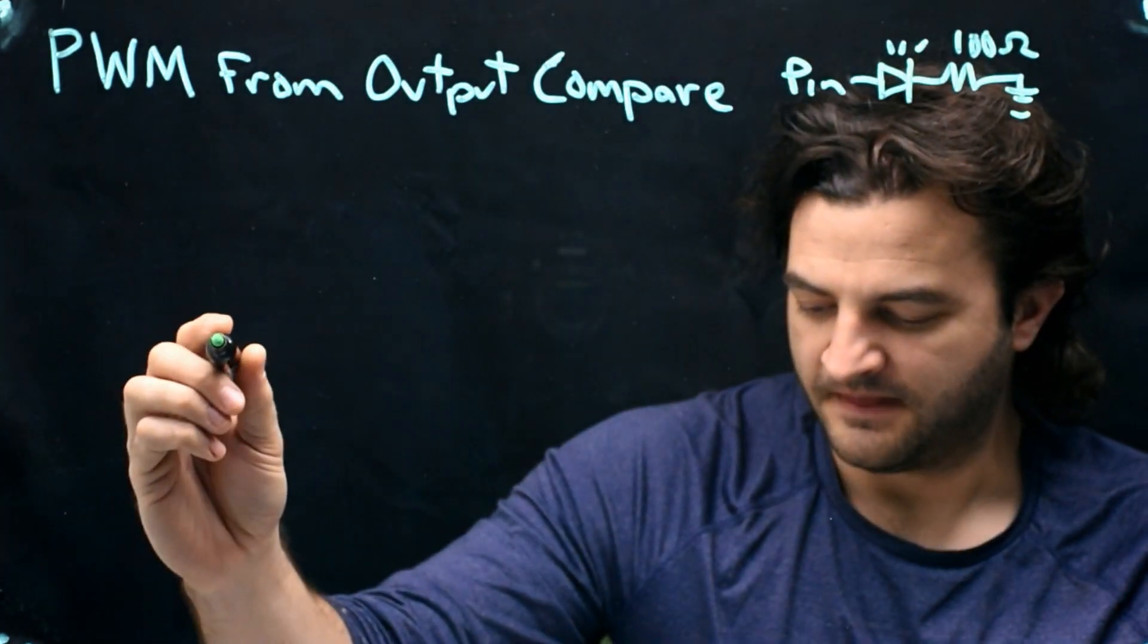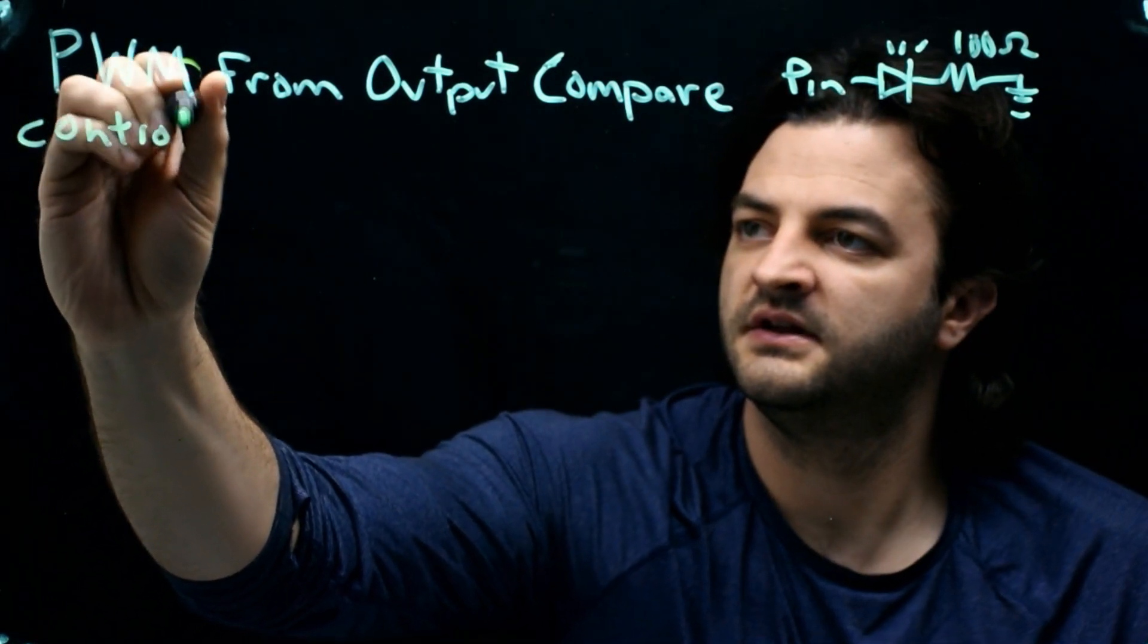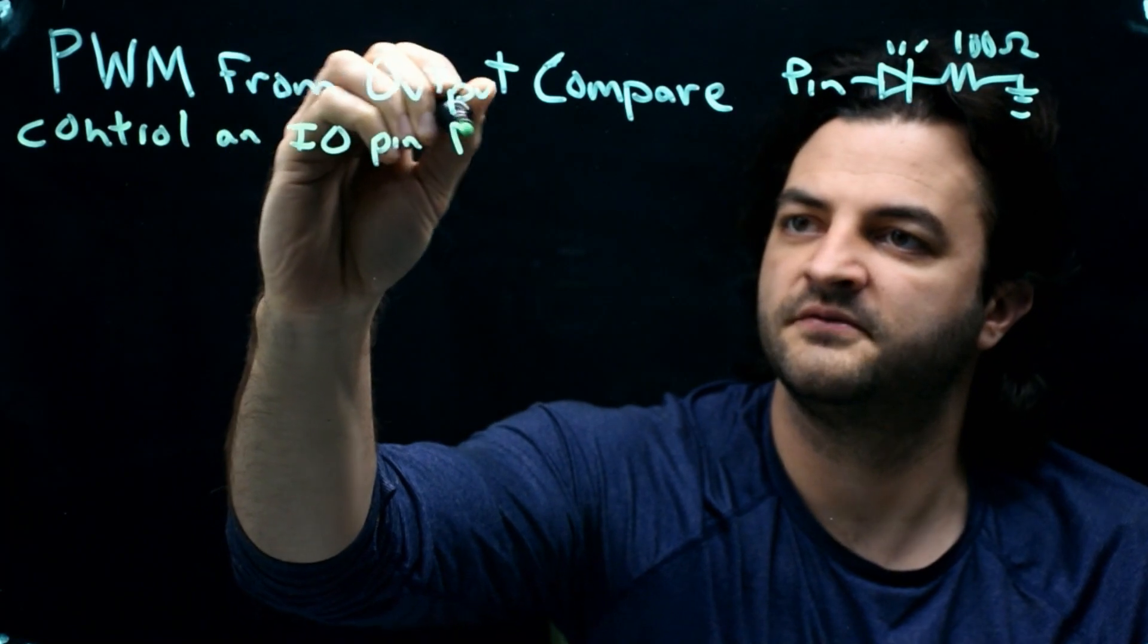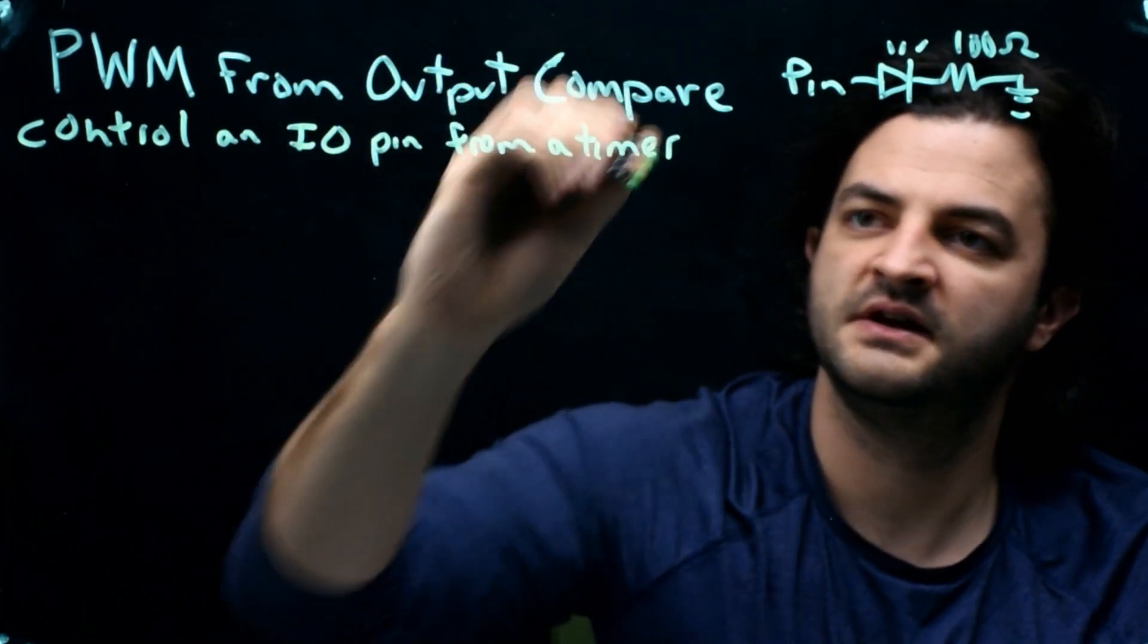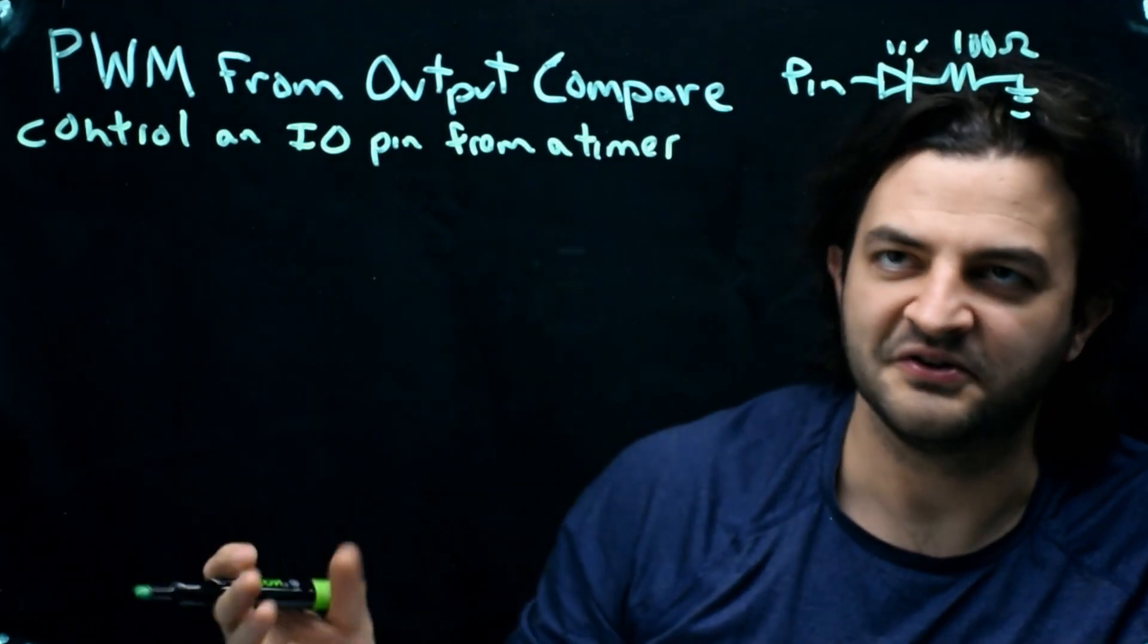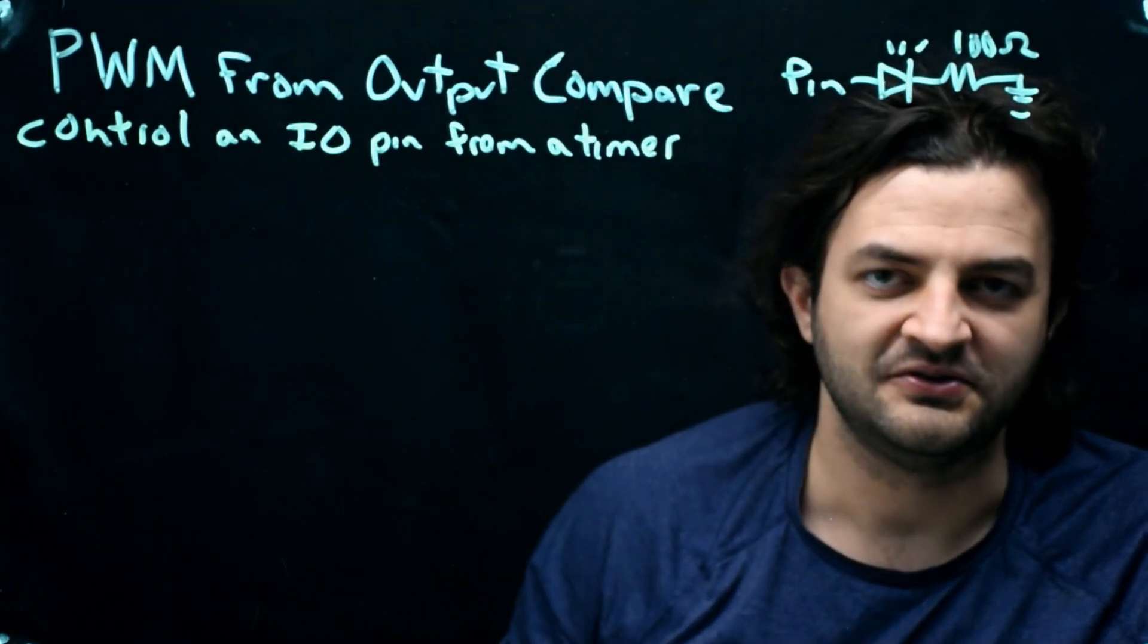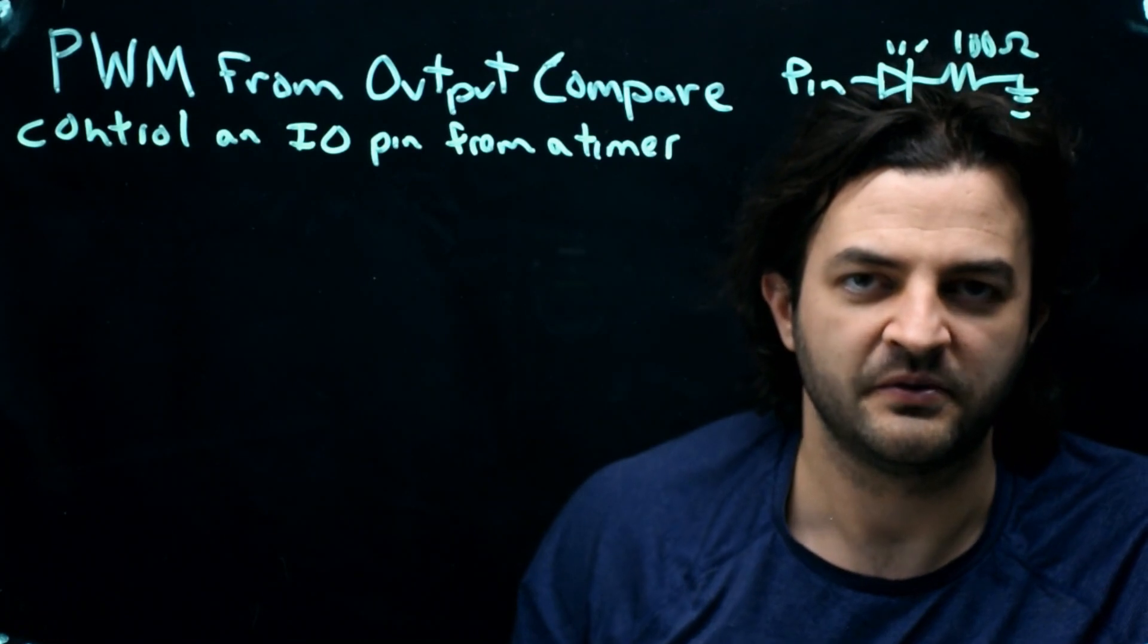So this peripheral lets us control an IO pin from a timer. Now we want to be able to use the timer because it's annoying to turn this pin on and off. We could use a lat to control whether the pin is on and off, and we could use the core timer with a delay.